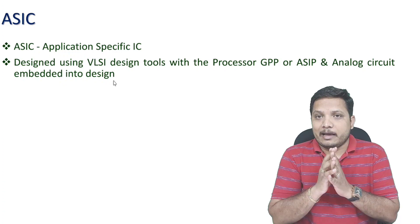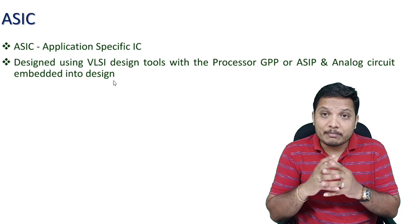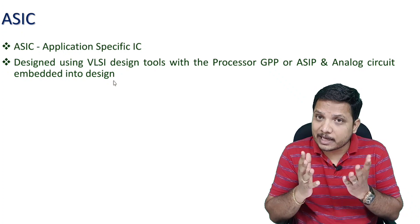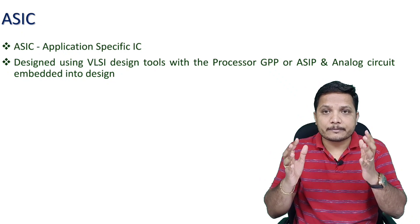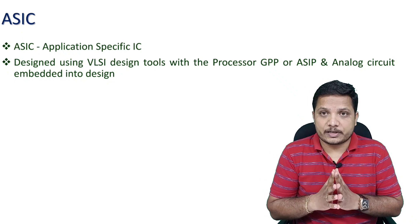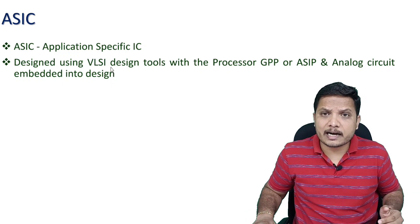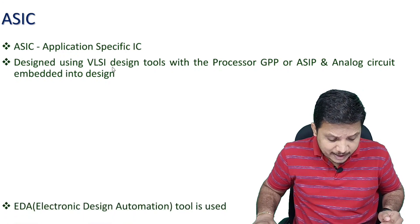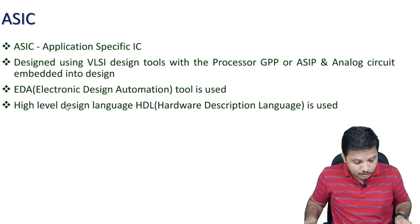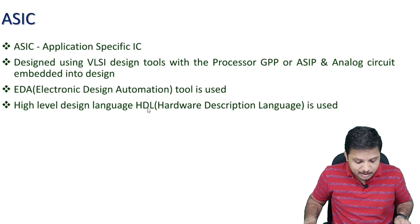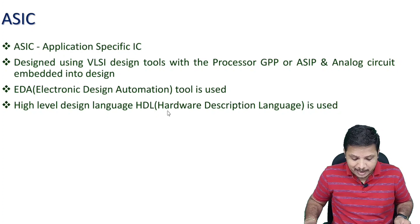Application-specific integrated circuits can have a general-purpose processor or an application-specific processor, and there will also be integration of analog circuits along with the processor. ASIC uses EDA — Electronics Design Automation tools — and a high-level design language HDL, which stands for Hardware Description Language.